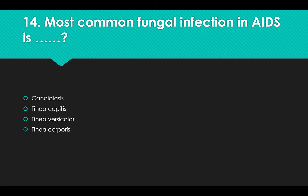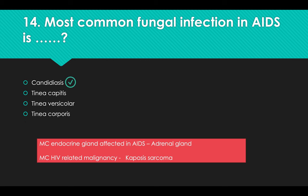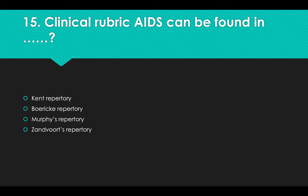Most common fungal infection in AIDS: Options: A) Candidiasis, B) Tinea capitis, C) Tinea versicolor, D) Tinea corporis. Answer: Option A, Candidiasis. Most common endocrine gland affected in AIDS is the adrenal gland. Most common HIV-related malignancy is Kaposi's sarcoma.